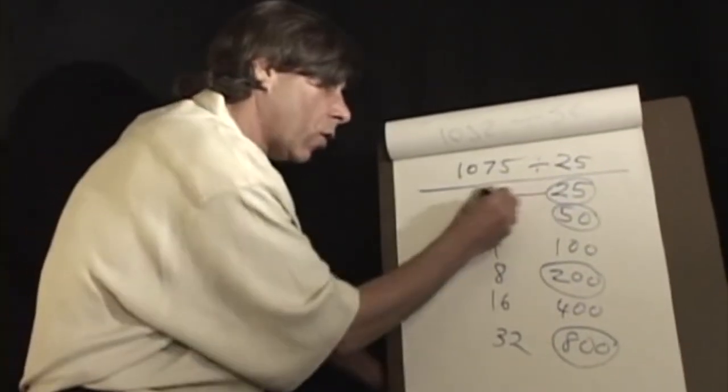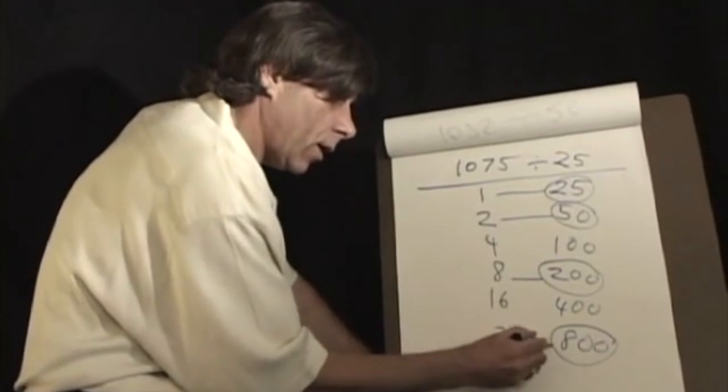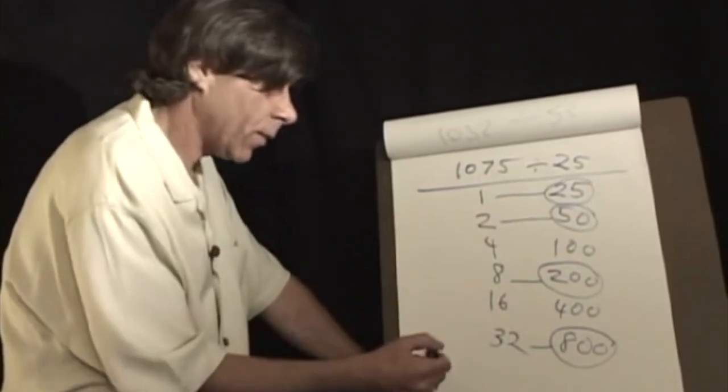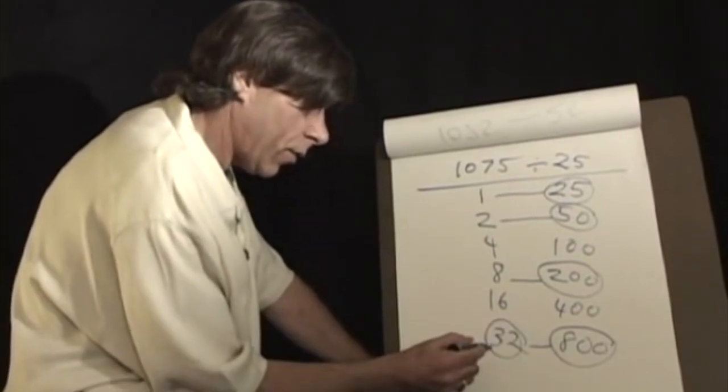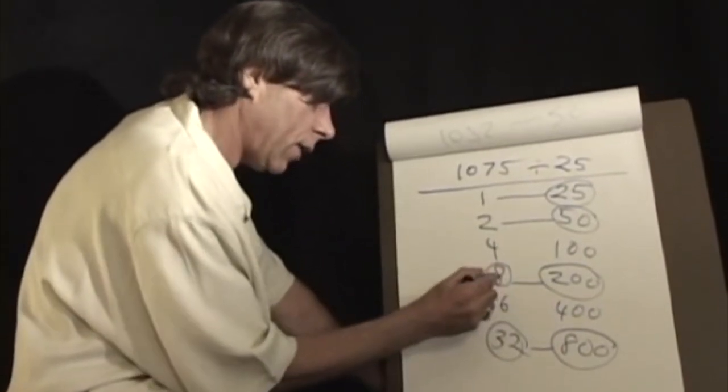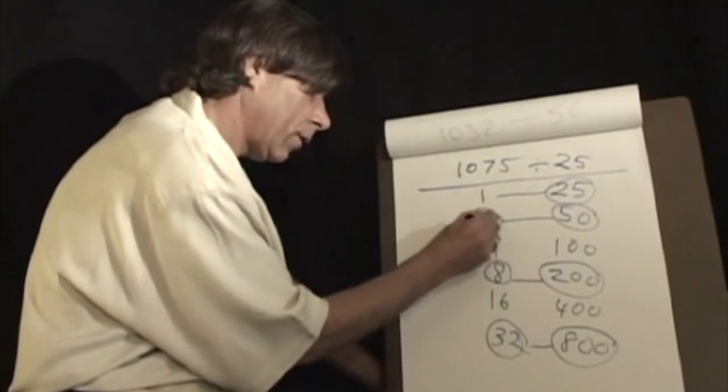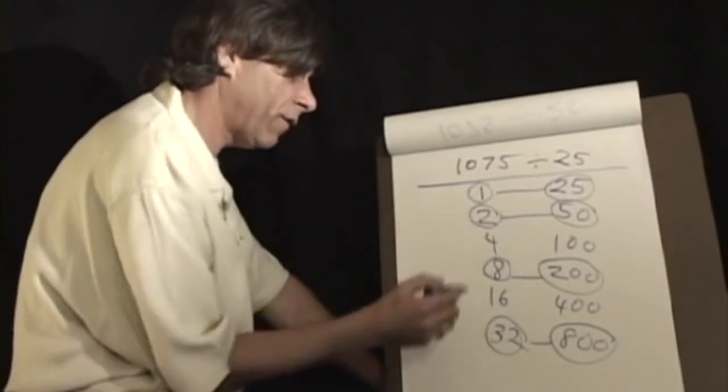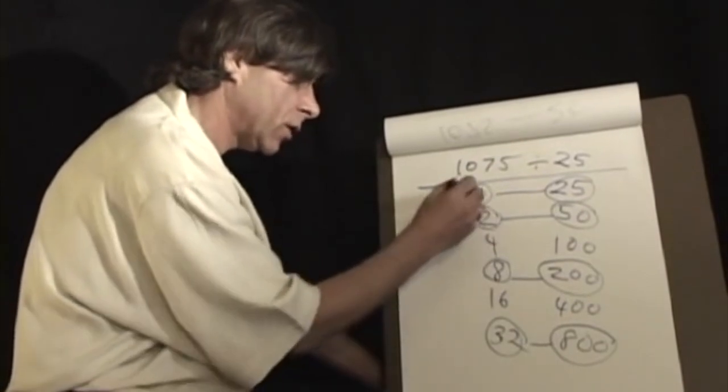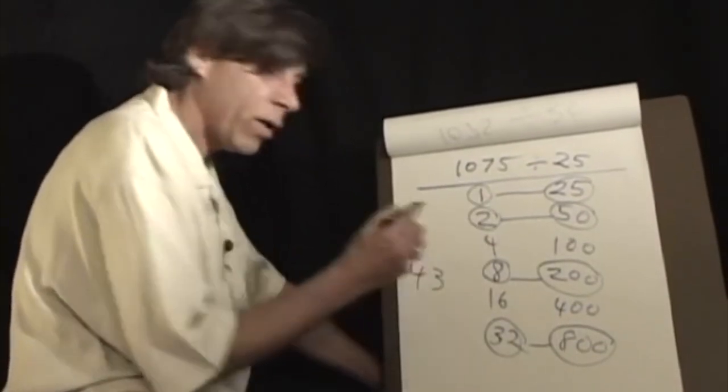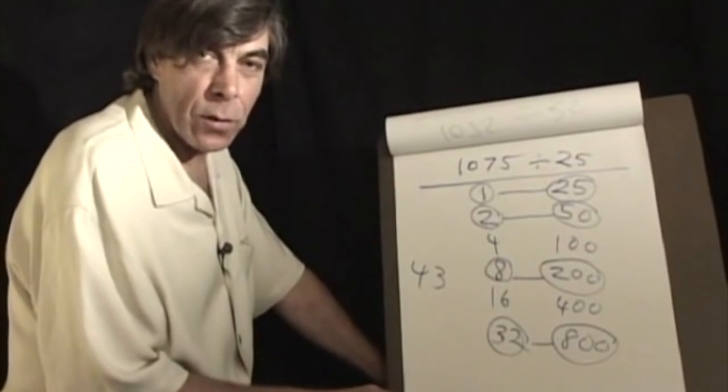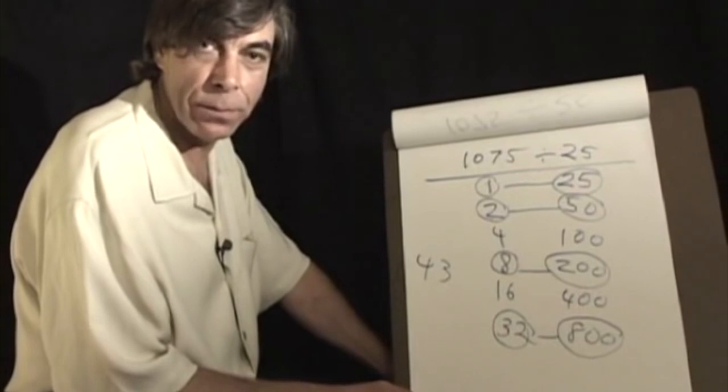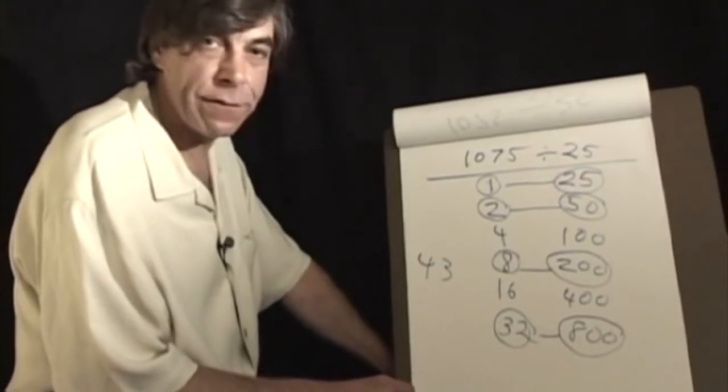I just have to look across at the numbers that correspond there, or in a computer there would be an electrical circuit. And if I know that thirty-two plus eight is forty, forty-two, forty-three. So one thousand seventy-five divided by twenty-five is thirty-two plus eight plus two plus one, forty-three. No multiplication table, no long division, no carrying, no borrowing. It's just very straightforward.